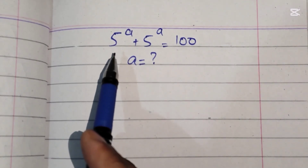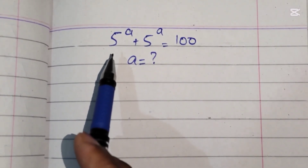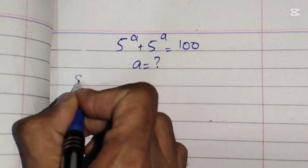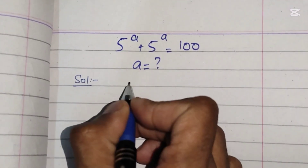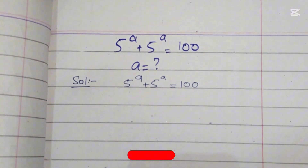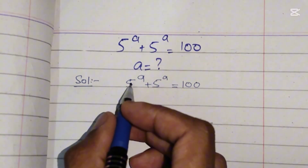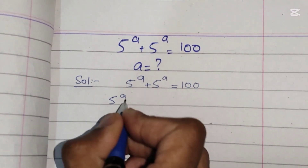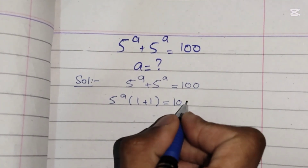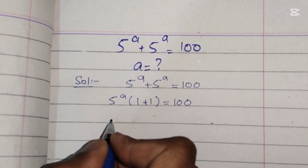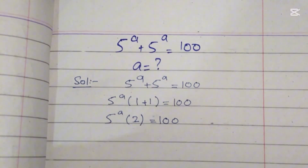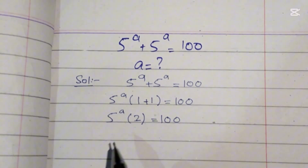Most students fail to solve this question by overthinking, but it will be solved here in a number of steps with full explanation. So we will start the solution: 5 power a plus 5 power a equals 100. We can take 5 power a common on the left, leaving 1 plus 1 equals 100. 1 plus 1 is 2, so 5 power a times 2 equals 100.